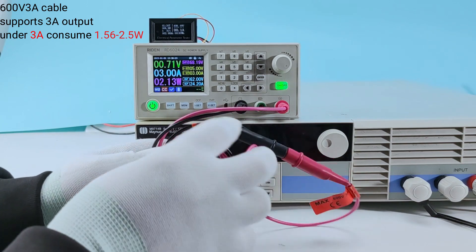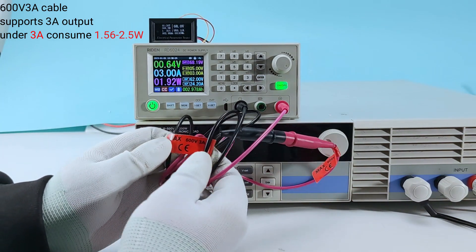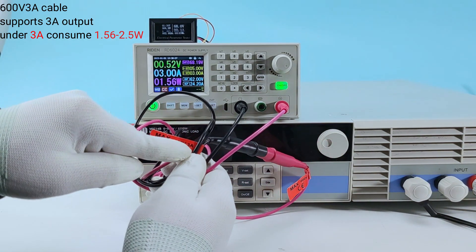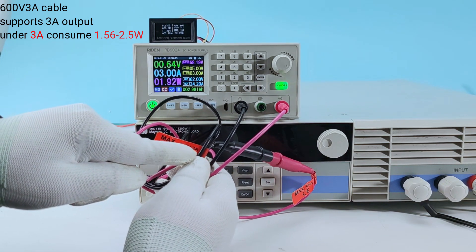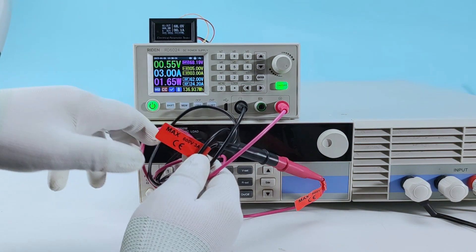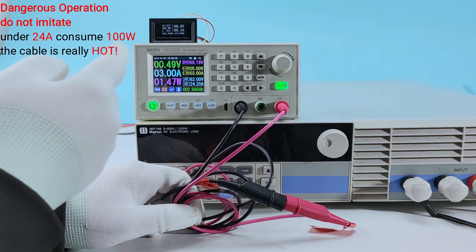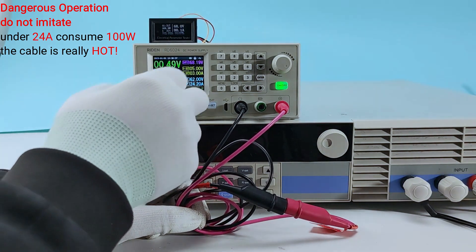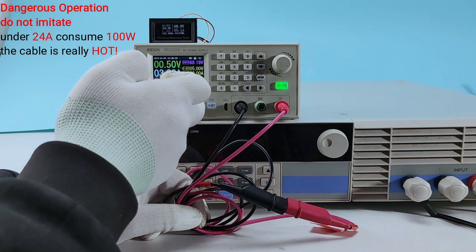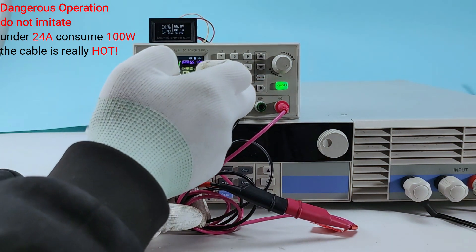And since it shows that it only supports 3A, you cannot set higher current. We can test 24A. It is very dangerous. Ok, we set 24A.